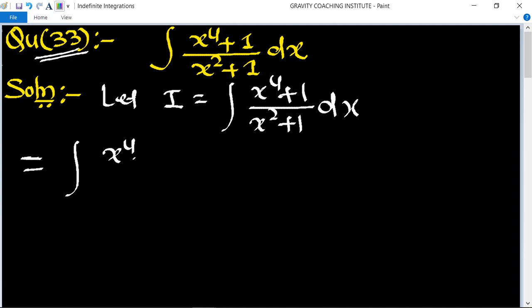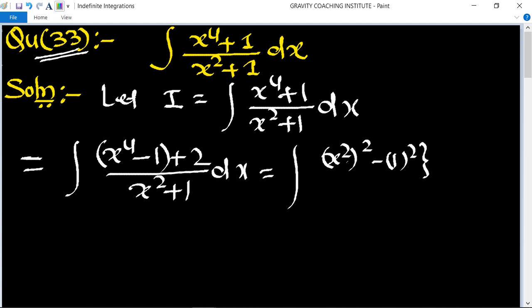This becomes x to the power 4 minus 1 plus 2 upon x square plus 1 dx. Converting to formula form, this becomes x square whole square minus 1 k square plus 2 upon x square plus 1 dx. Using identities, this becomes: